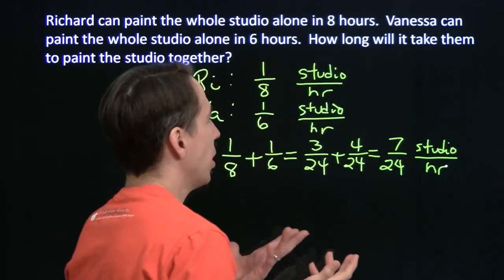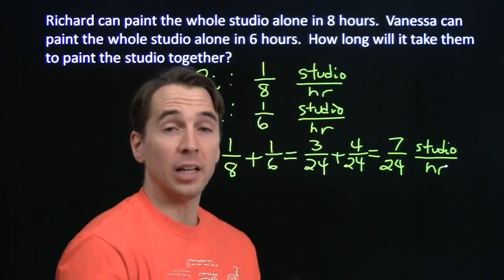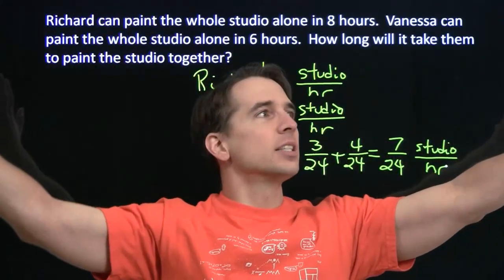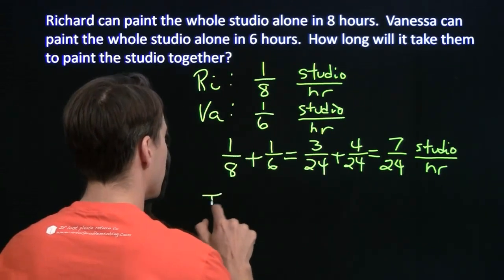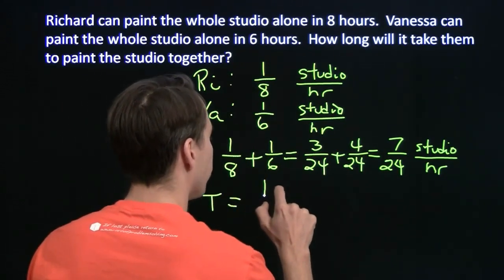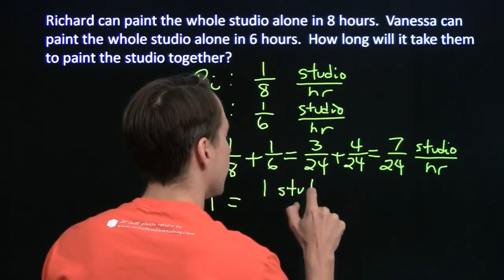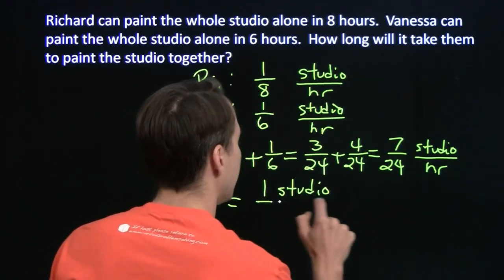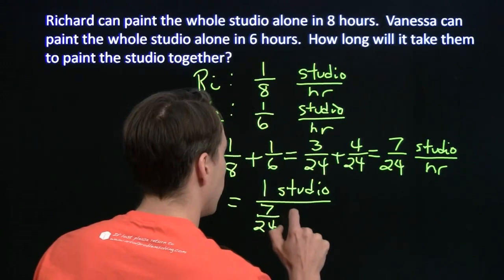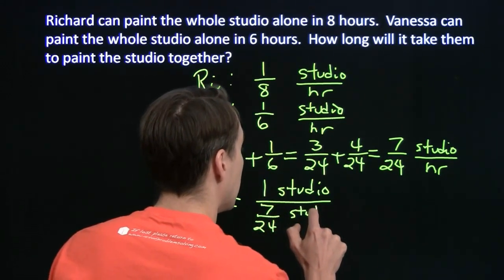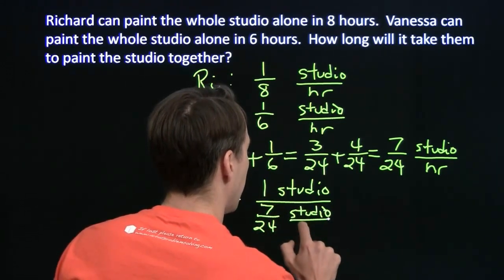There's our rate, and our time. Well, that's what we're trying to figure out. We're trying to figure out the time. And the distance? The distance is one whole studio. So to find the amount of time it's going to take us, we take our one whole studio that we have to paint, and we divide that by our rate over here, which is 7 over 24, seven-twenty-fourths of the studio per hour.